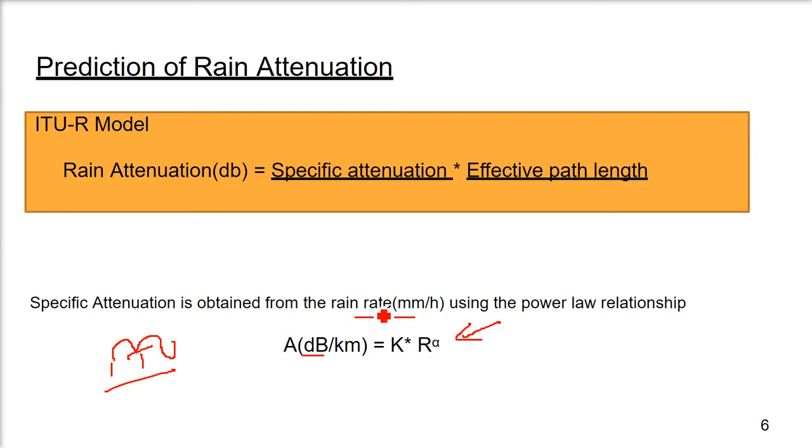This rain rate data, because it is statistical, is available for us. The regions of earth are divided into various categories, labeled with an alphabet. Depending upon the place where you are, the rain rate may be different. ITU rain model says that rain attenuation in dB is simply specific attenuation multiplied by the effective path length.